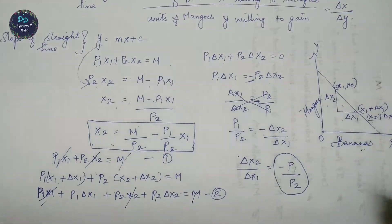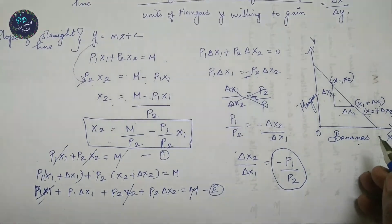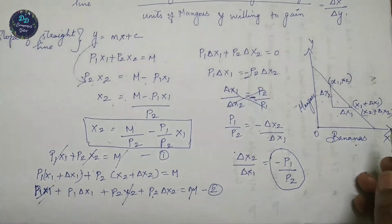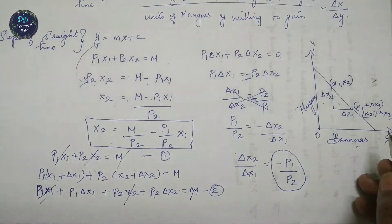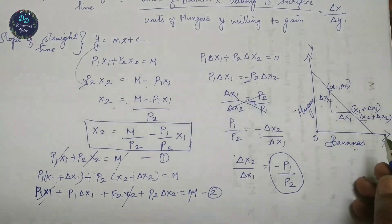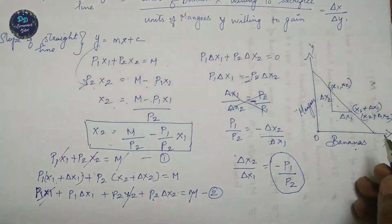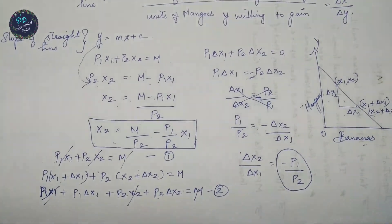I hope you all understand the concepts of budget line, budget constraint, and budget set, and how to derive the slope of the budget line. Thanks for watching — please share and subscribe to the channel. Thank you.